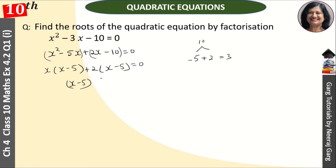So here we have x minus 5 and here we have x plus 2, that is equal to 0.